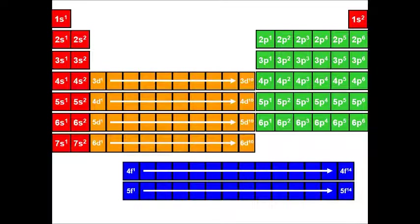Notice that the p electrons or the orbitals that have the p designation would be for the elements from boron to neon in that section. And then in terms of group number, that would be groups 13 to 18.